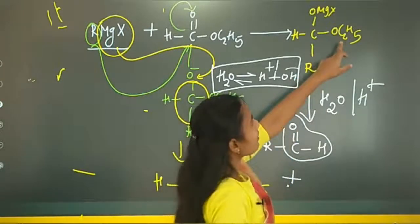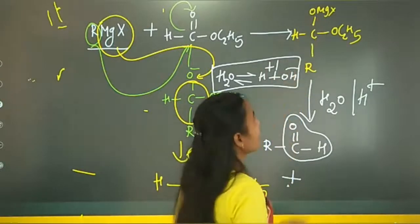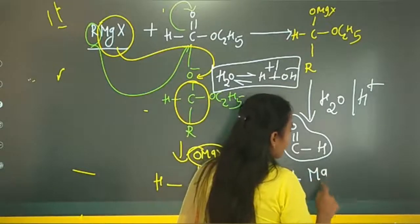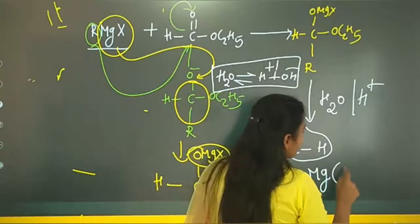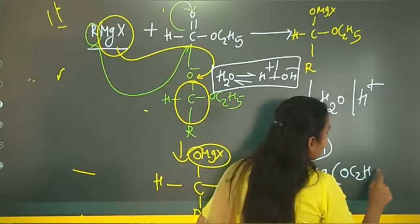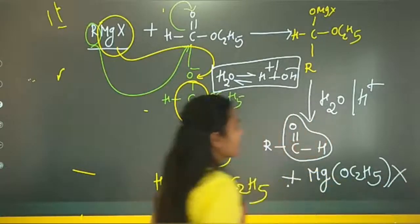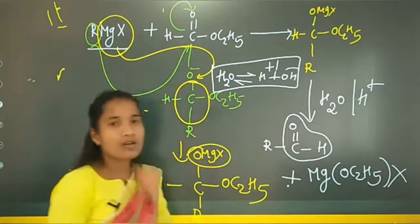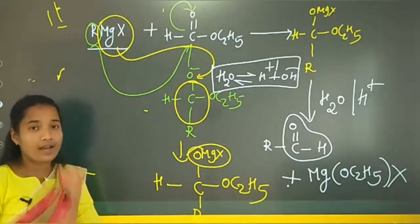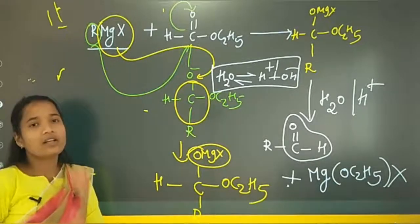The remaining product after hydrolysis is OC2H5 with MgX — that is Mg(OC2H5)X. This completes the preparation of aldehydes using the Grignard reagent.